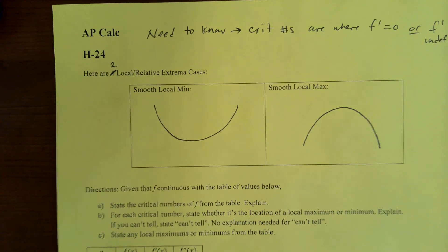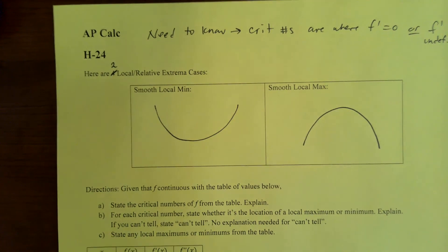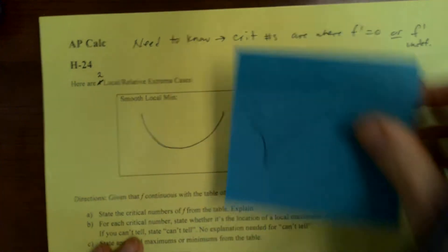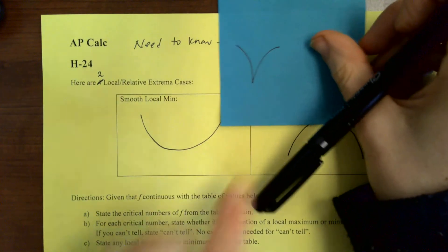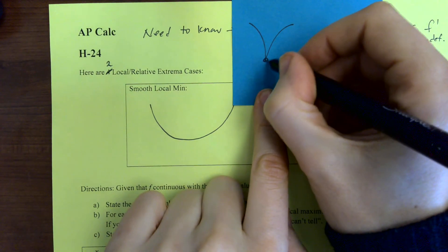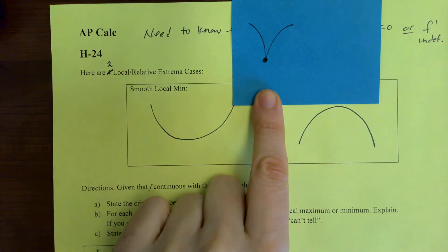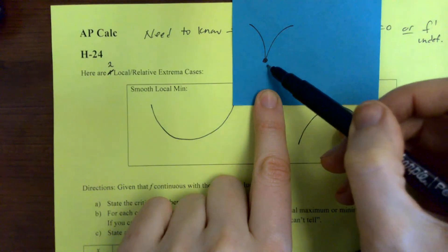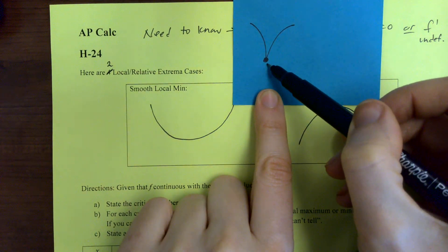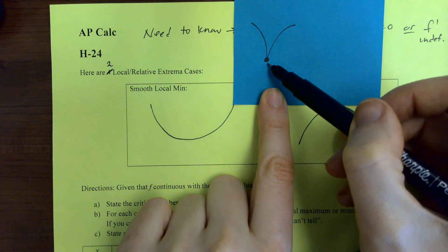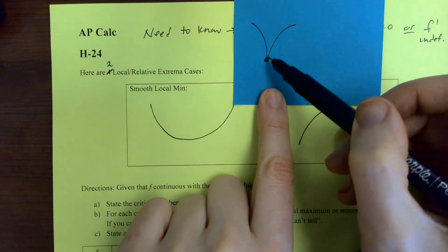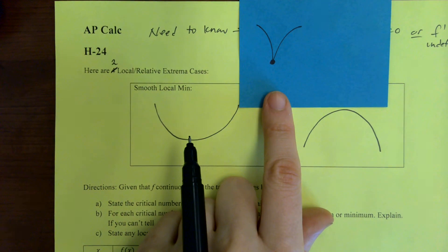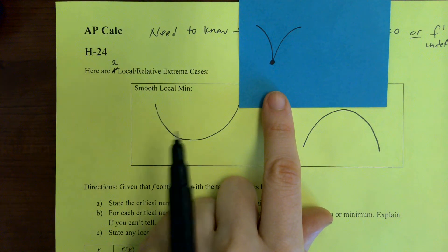When I say smooth, I basically mean that the derivative exists. Because you could also have — we've talked about this in the past — a case like this. We've got a local min there, but the function is continuous but not differentiable at this point. So the derivative is undefined right here. But if this were smooth, then the derivative would be defined — it would be zero.